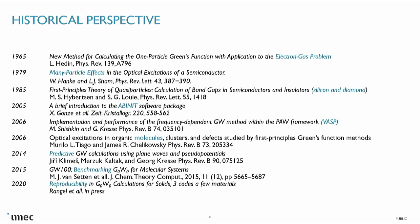Let me start with my little historical perspective on GW. GW is quite old already — 1964, when Hedin wrote down the equations. Then it took about 15 to 20 years before the first actual calculations were done, first on some very small systems: silicon, diamond. Then it took another 20 years for GW to become available in actual codes that people could use. There was ABINIT and afterwards the VASP code. At that point, people also started working on molecules, finite-size systems, and lower-dimensional systems.